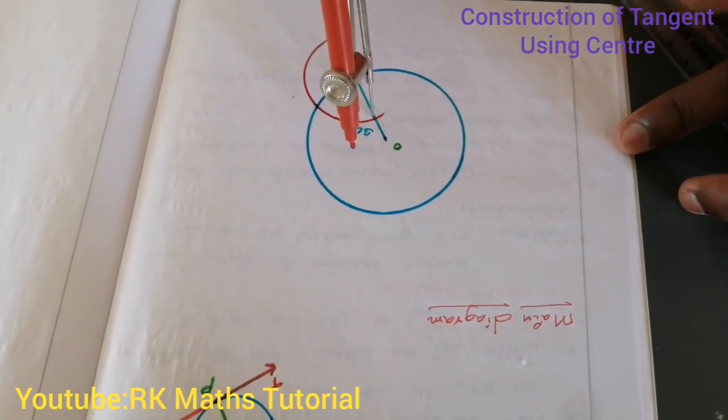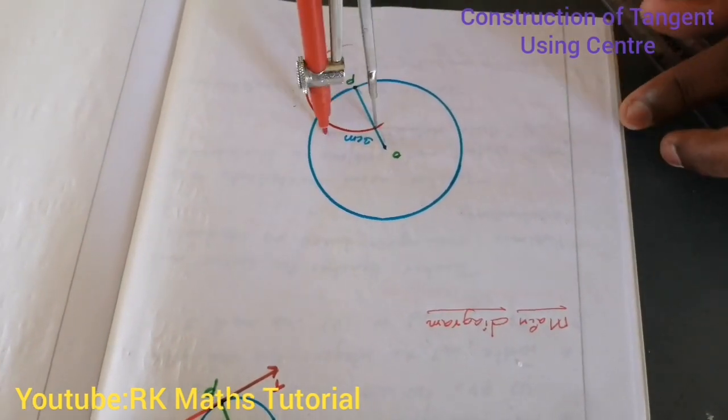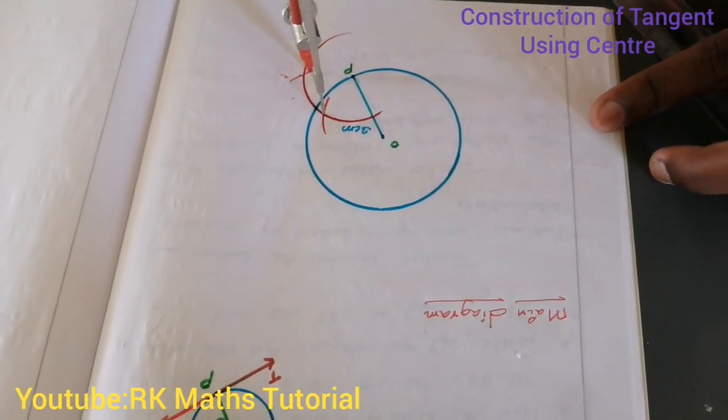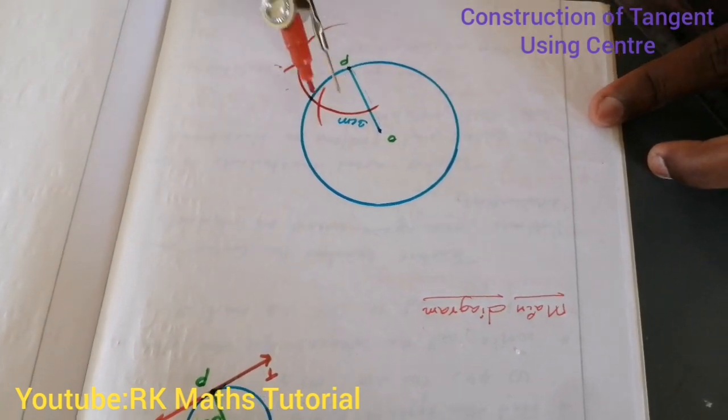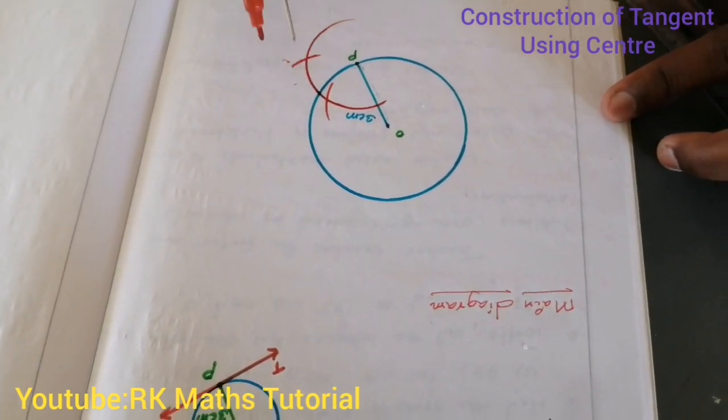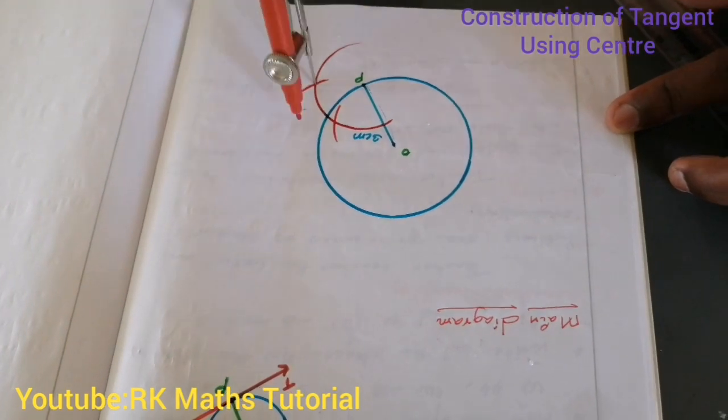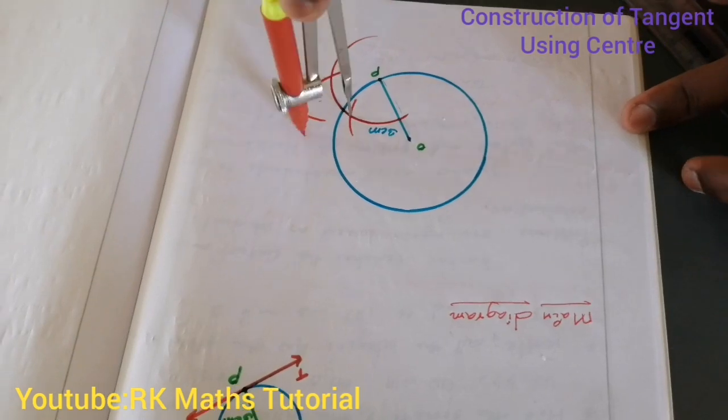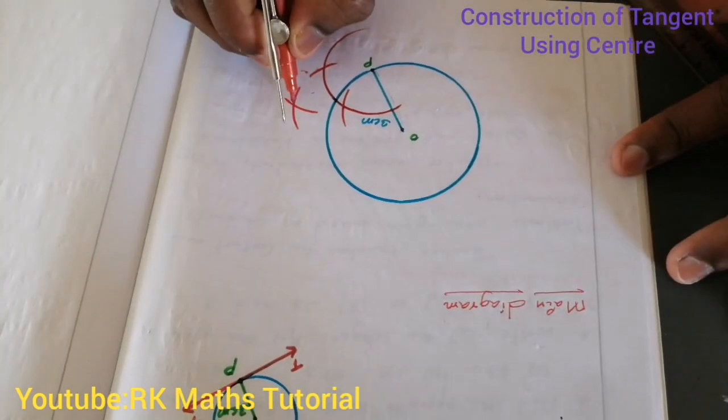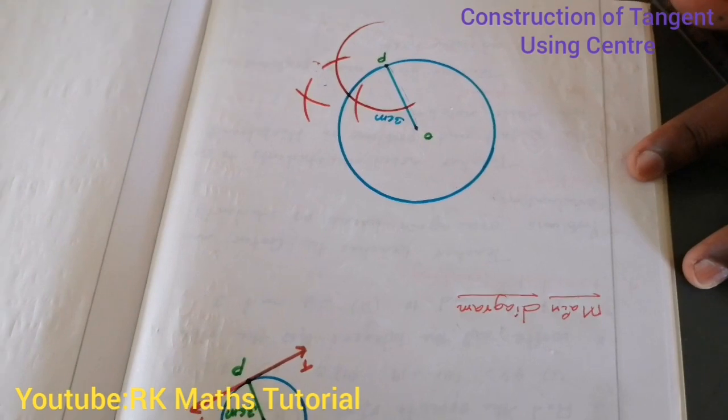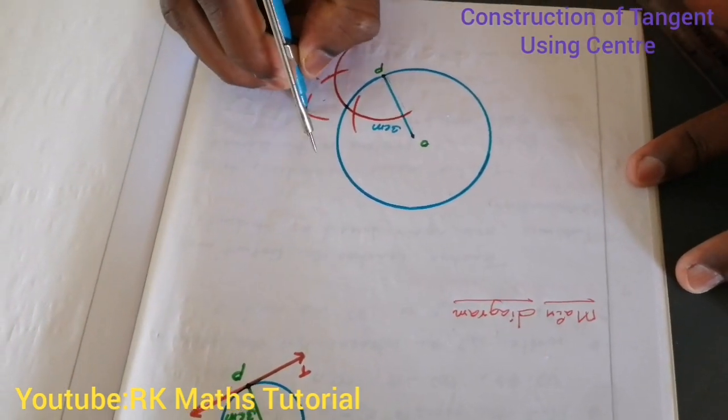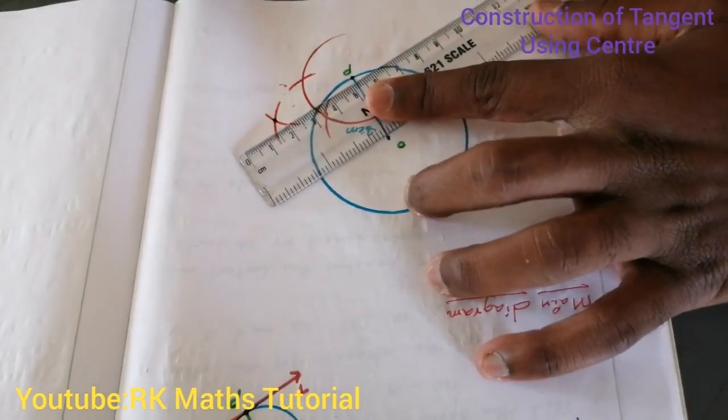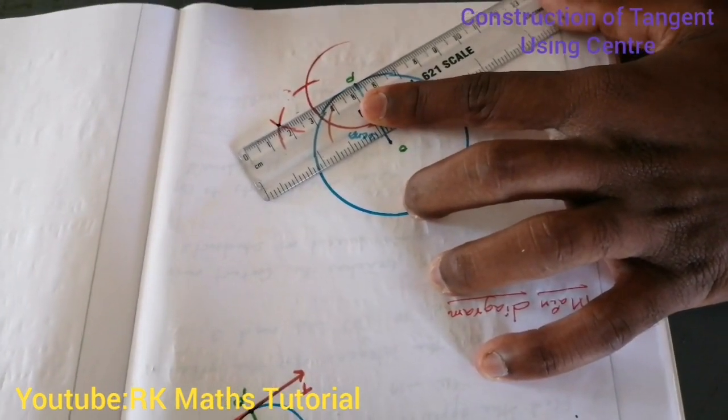Now, if you change the distance, draw another arc. So, if you are using different radius, you can draw arcs. Draw another arc on the other side.